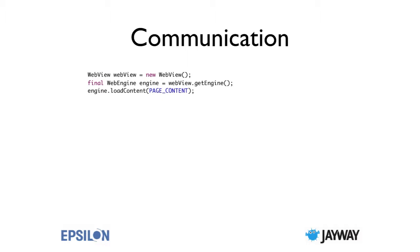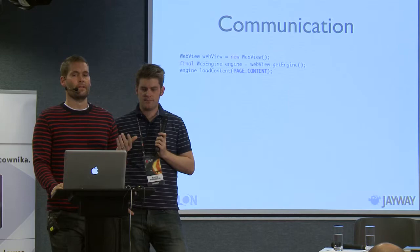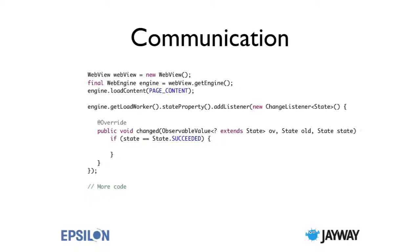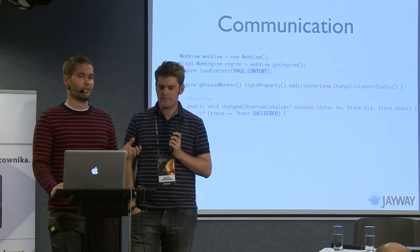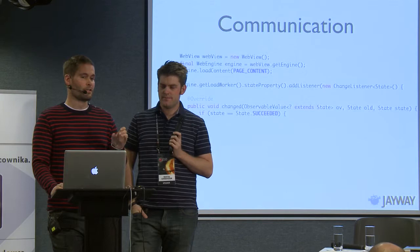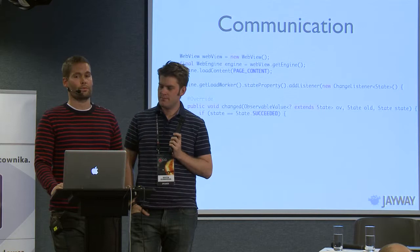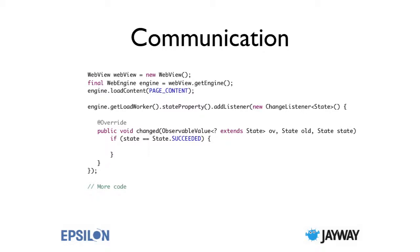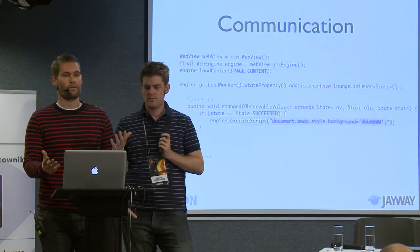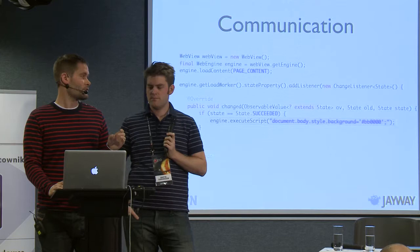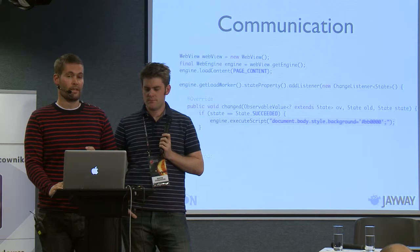We create a WebView, get the engine, and load a page. Before I start sending JavaScript commands, I have to wait for the page to finish loading. I do that by registering a change listener to the state property of the load worker. When the changed method gets invoked and the state equals succeeded, the page has finished loading. As soon as we pass the state condition, we can start sending JavaScript commands into the WebEngine using engine.executeScript(). To the executeScript method, you can pass any valid JavaScript — it can be a really big JavaScript to manipulate the DOM. In this case, we just change the background of the body to red.